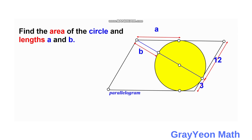First, notice that the point of tangency at the bottom of the circle has a corresponding point of tangency on the other side. In between those two points of tangency, there is a line and they intersect at a point. If one segment is three units, then the other should also be three units.